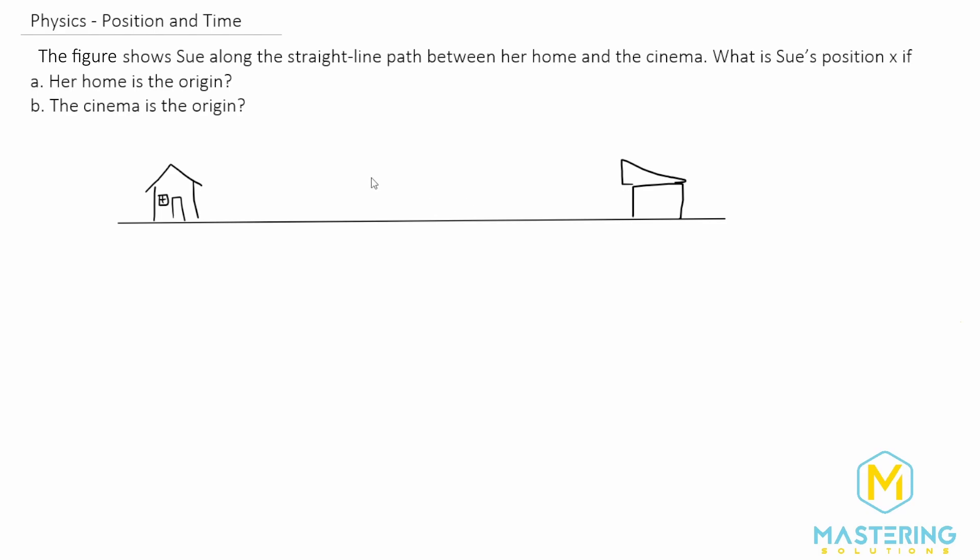Welcome to Mastering Solutions. So we have Sue right here and she's walking down the road, and the diagram shows us that Sue is two miles from her house and she's three miles from the movie theater.